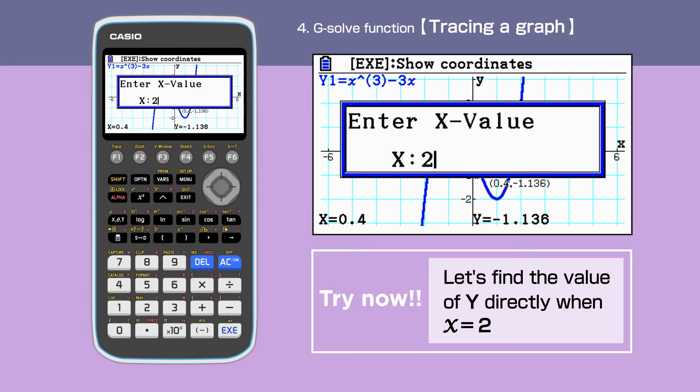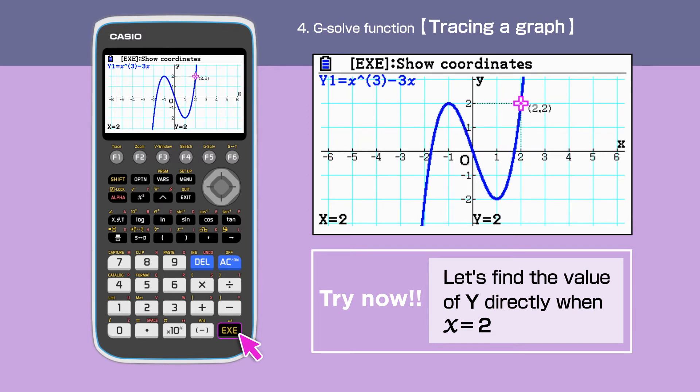The X value window is displayed, indicating to find the value of Y when X is 2. Once we press execute, the cursor will move to this place, and give the value of the Y coordinate.